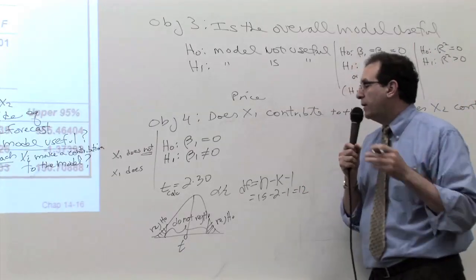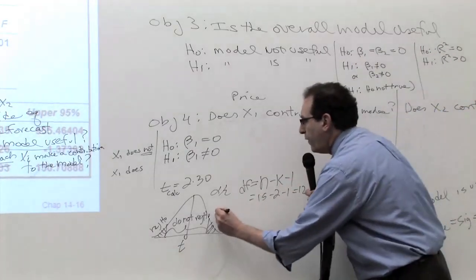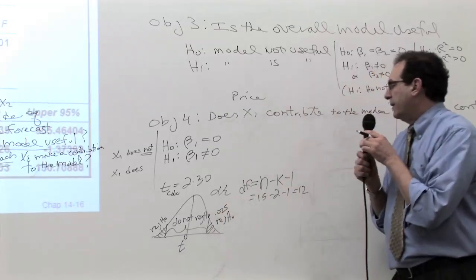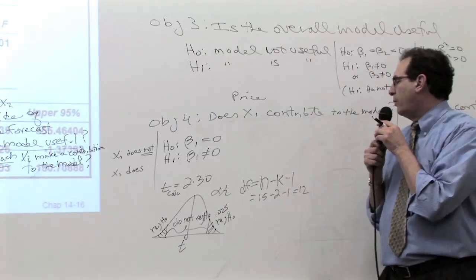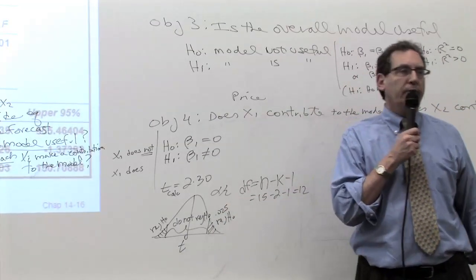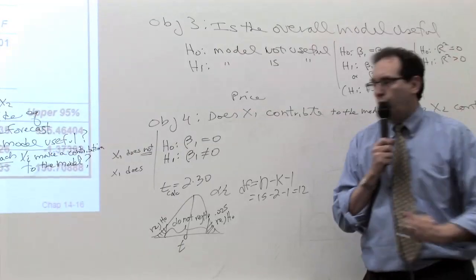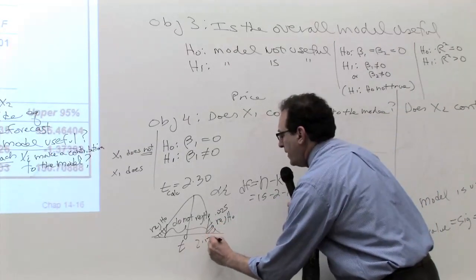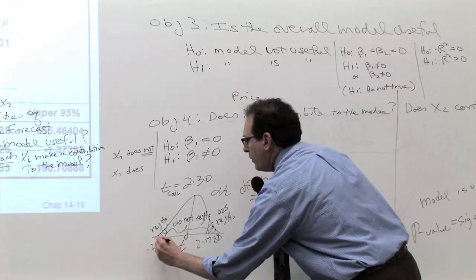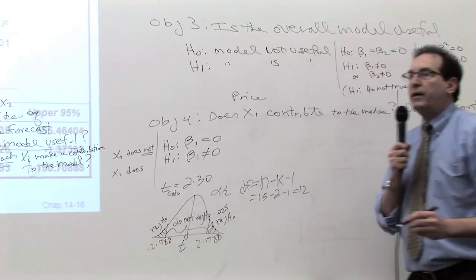Anyway, can somebody quickly look up the .025 F table down to row number 12, degree of freedom 12? Two point one seven eight eight, minus two point one seven eight eight.